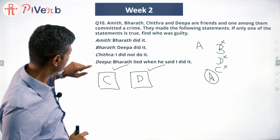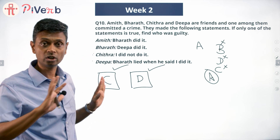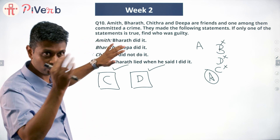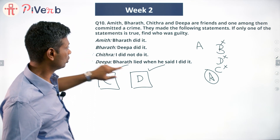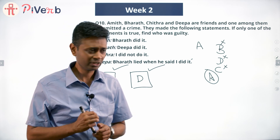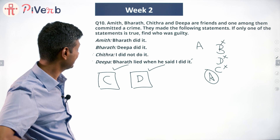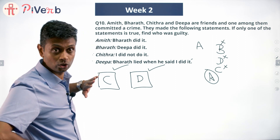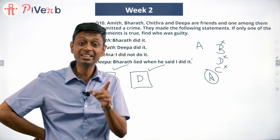If C were true, D would also be true. Chitra says 'I did not do it' — so Chitra didn't commit the crime. A, B, and D should have lied: Bharat did it is wrong, Deepa did it is wrong, by elimination Amit committed the crime. But Deepa's statement — 'Bharat lied when he said I did it' — would also be true. So C alone being true is ruled out.